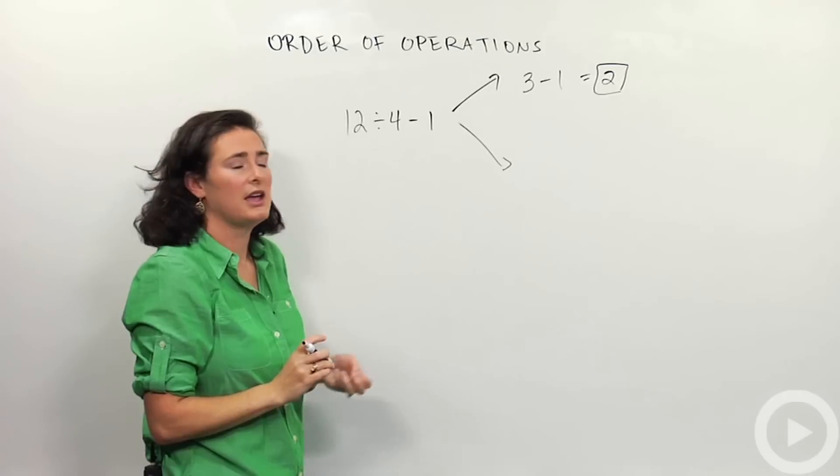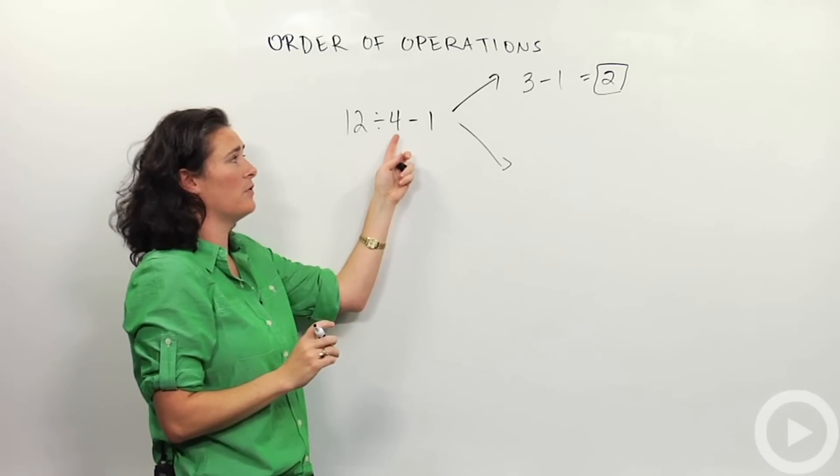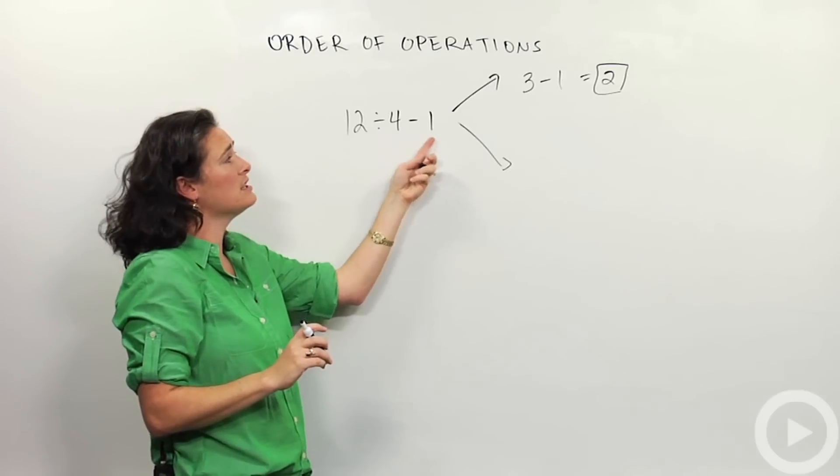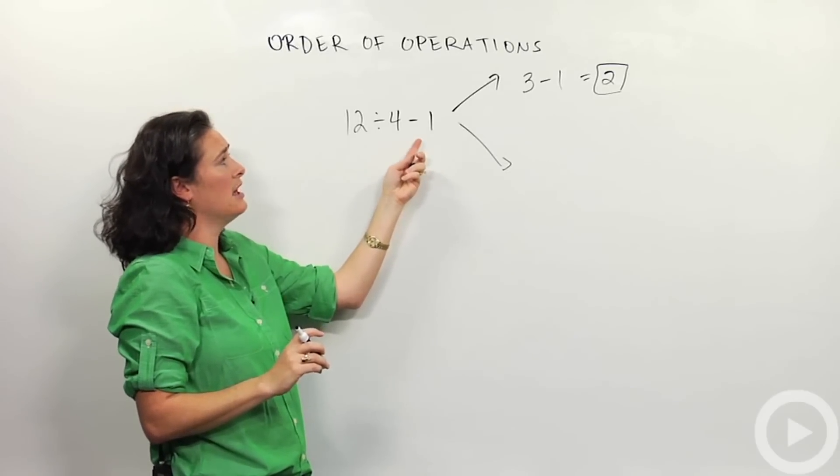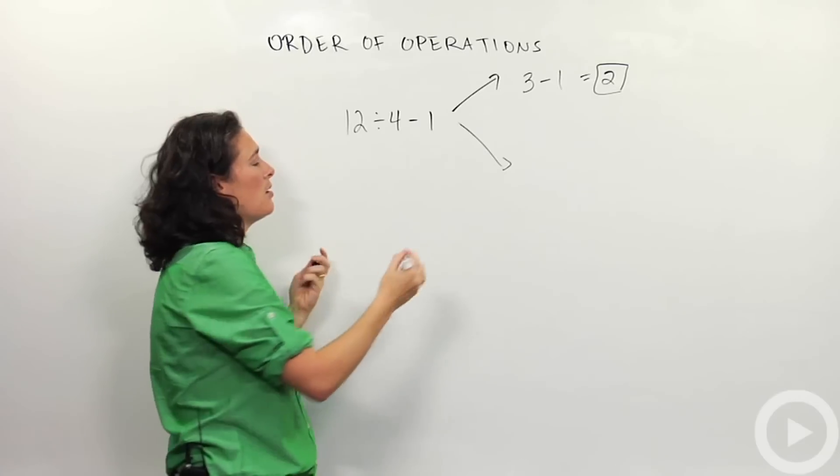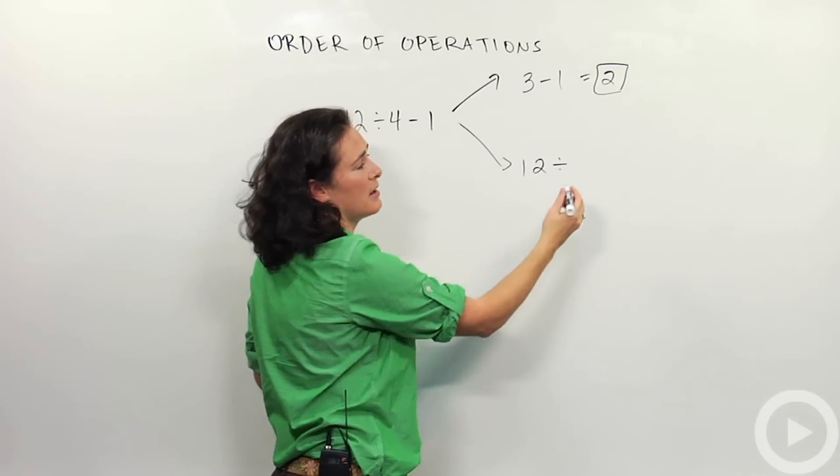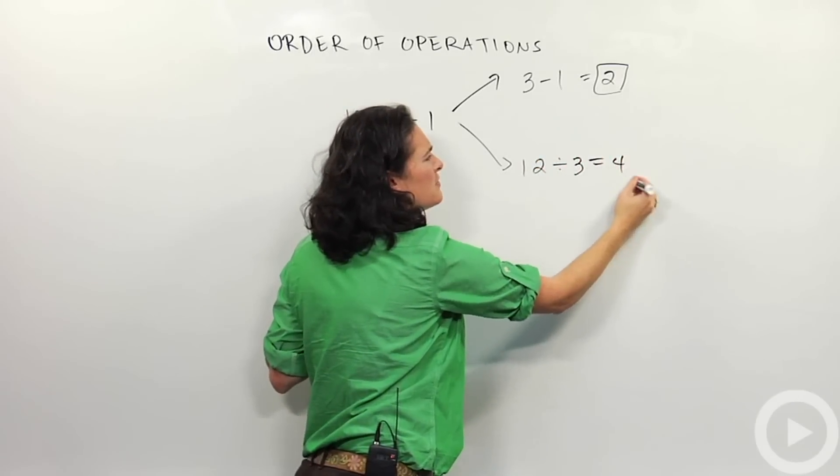Well, what if you did it a different way? What if instead of doing 12 divided by 4 and then subtract 1, what if you did the 4 subtract 1 bit first? 4 subtract 1 is 3. So another way a person might approach this problem is 12 divided by 3, which is 4.